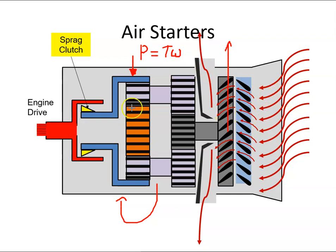So we're getting a high torque value here, and that should be enough to turn the engine over. Now the starter is connected to the engine drive via this sprag clutch.